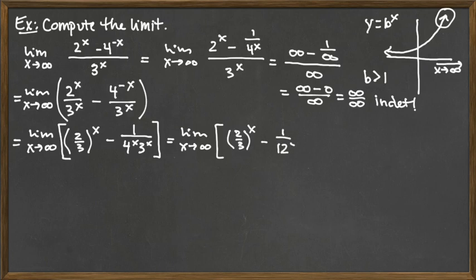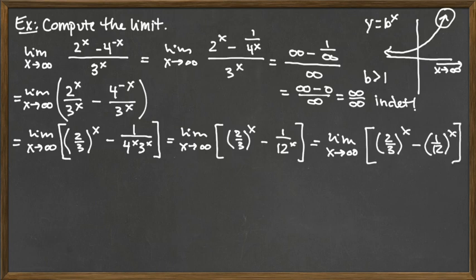Well, 12 in the bottom raised to the x power, really we could look at this as using our exponent rules, we could have it written as (1/12)^x also. So either way you want to look at this, either way could be correct. We can either think about the bottom having a base bigger than 1, or we could think about the entire base of 1/12 being a base that's less than 1. So either way you want to look at it is fine on that particular term.